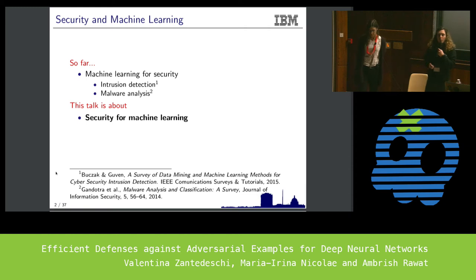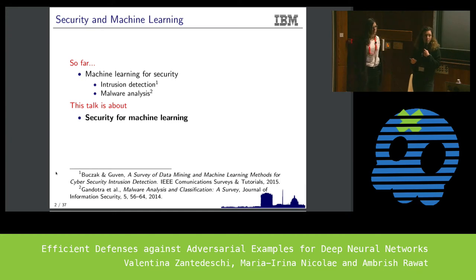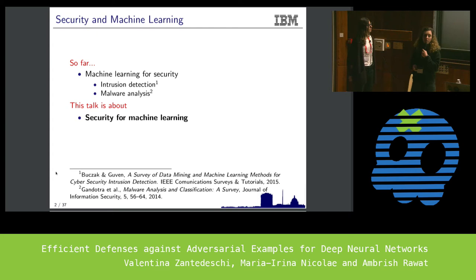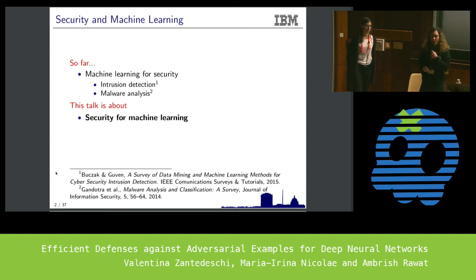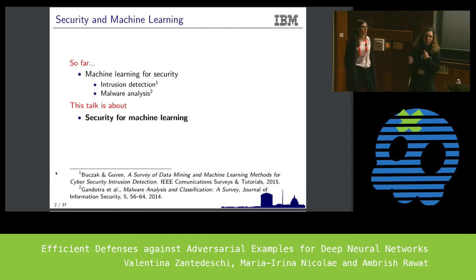What you are most used to seeing in your field is how machine learning can be applied to solve different security tasks. This has proven some success on some tasks but also created some controversies on others, because maybe people were expecting great performance which was not met. In this talk we'll be doing things the other way around — we will be speaking about some security problems of machine learning.